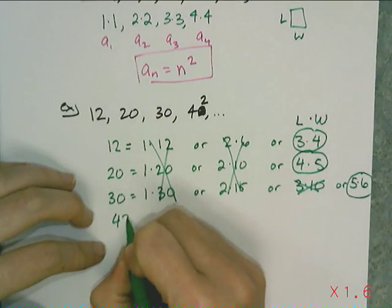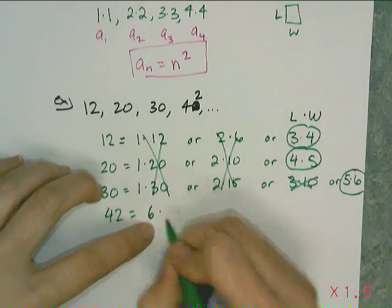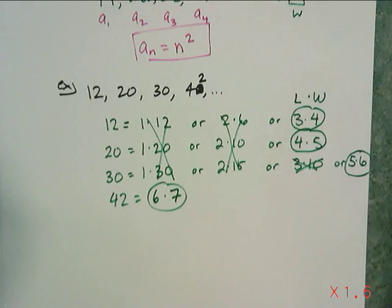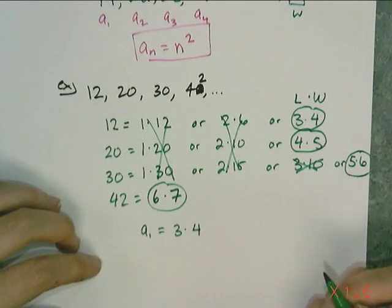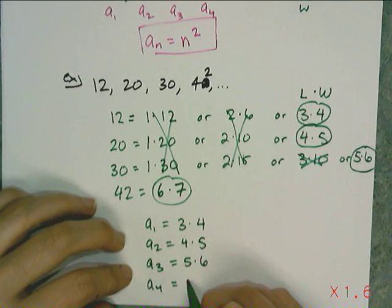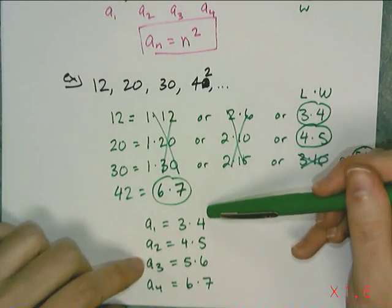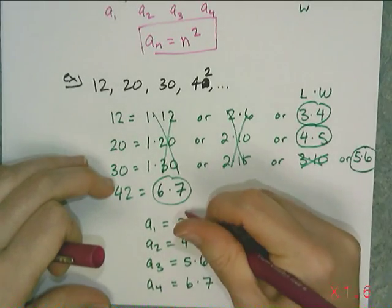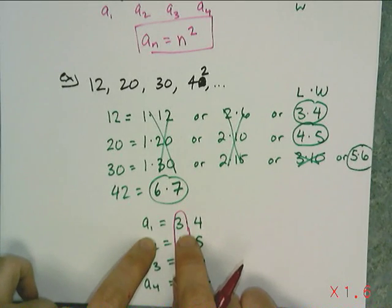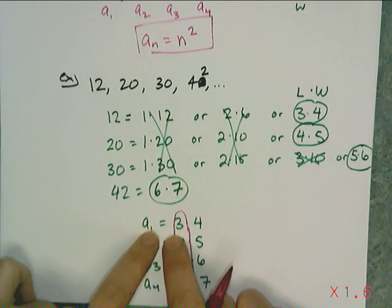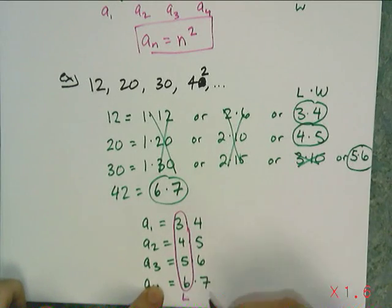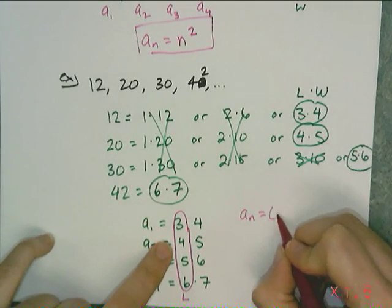So I'm going to rewrite these with a sub n notation: a sub 1 is 3 times 4, a sub 2 is 4 times 5, a sub 3 is 5 times 6, and a sub 4 is 6 times 7. I write the smaller number first, then the larger number. I want to find a pattern relating the stage number to each factor. I notice that if I add 2 to the subscript, I get the first factor: 1 plus 2 is 3, 2 plus 2 is 4, 3 plus 2 is 5, 4 plus 2 is 6. So the first factor is n plus 2.